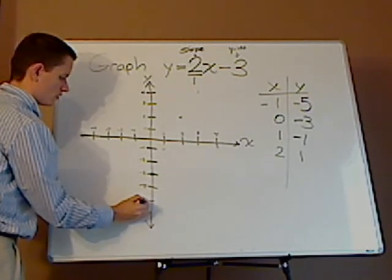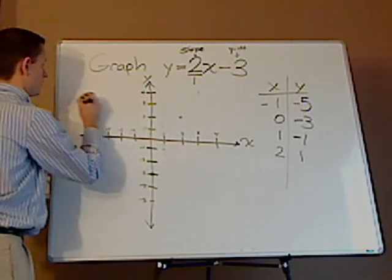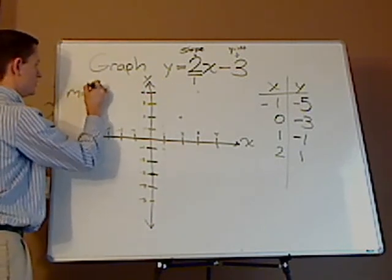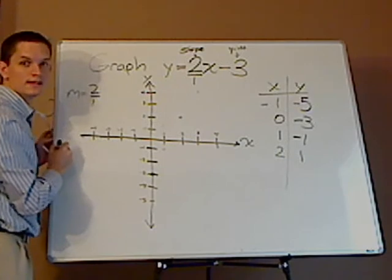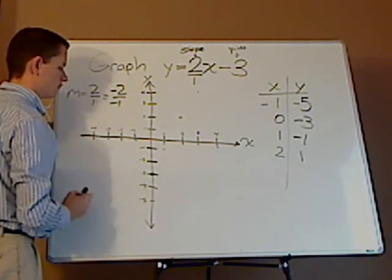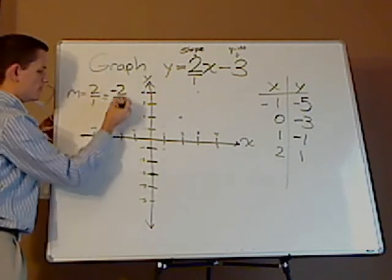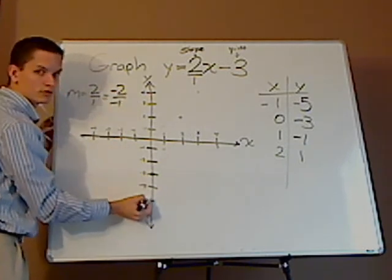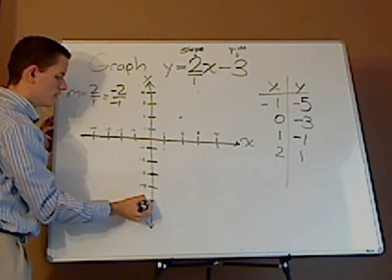If it's negative, you're going to go down two, and then with the run go towards the negatives, so it'll be about right here.